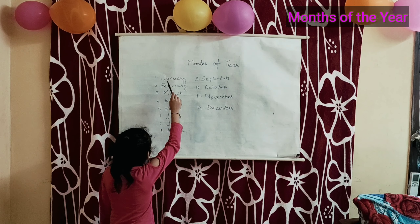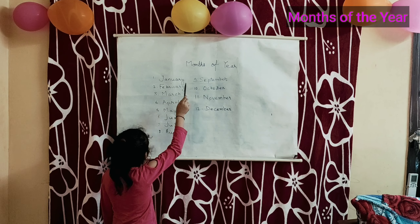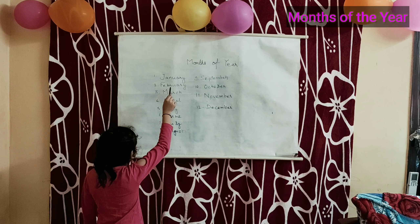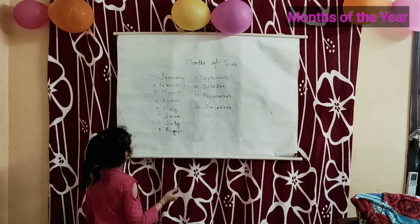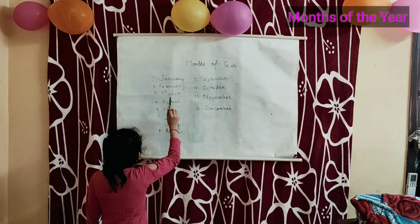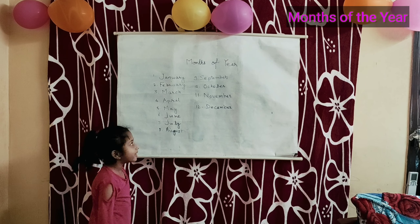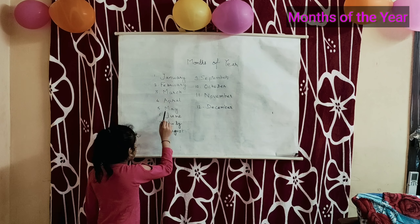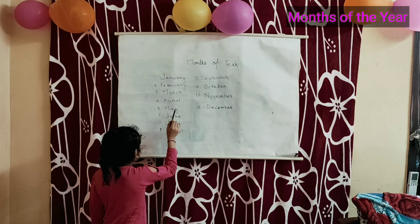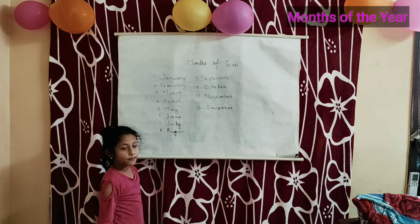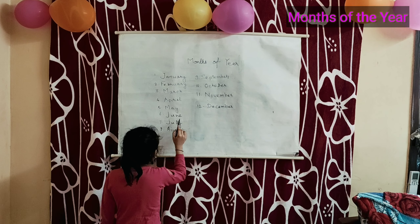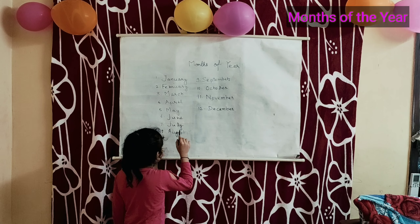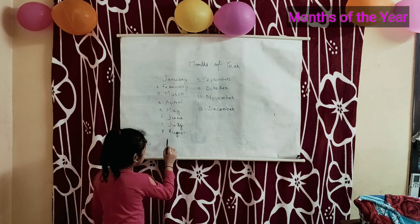J-A-N-U-A-R-Y, January. F-E-B-R-U-A-R-Y. M-A-R-C-H, March. A-P-R-I-L, April. M-A-Y, May. J-U-N-E, June. J-U-L-Y, July.